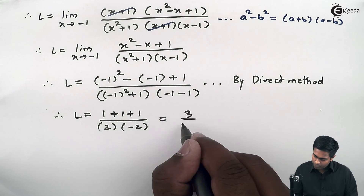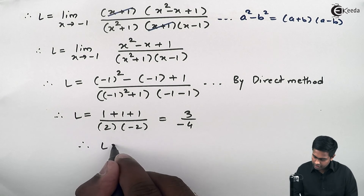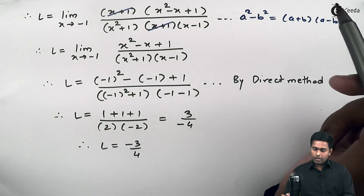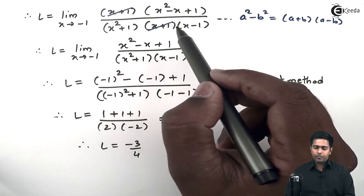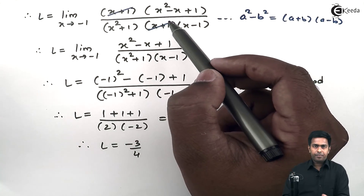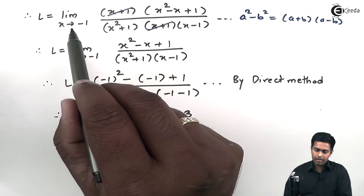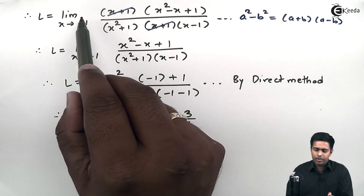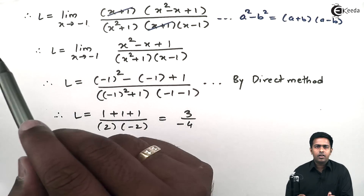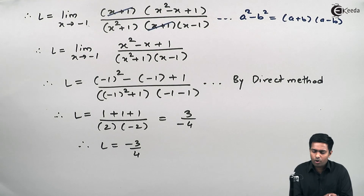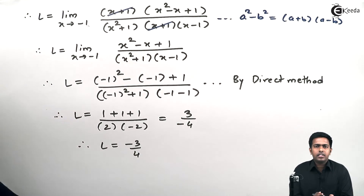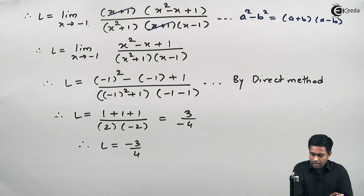Therefore the answer is -3/4. Here you can observe that the factor we cancelled was (x + 1) and the limit given was minus 1. You can remember this hint: whatever the limit given in the question, the factor that cancels will be opposite in sign. Here the limit was minus 1, so the factor was (x + 1). The answer is minus 3 upon 4. Thank you.